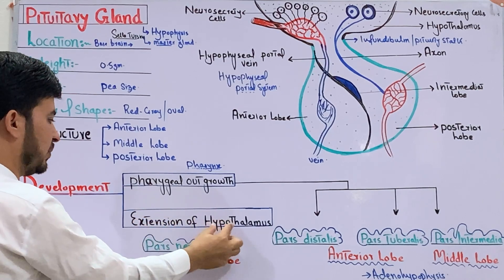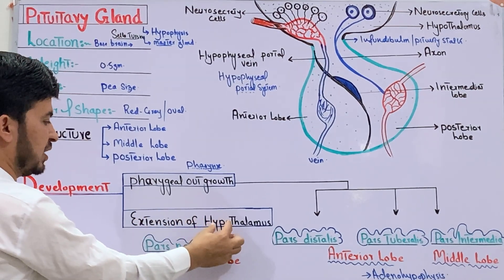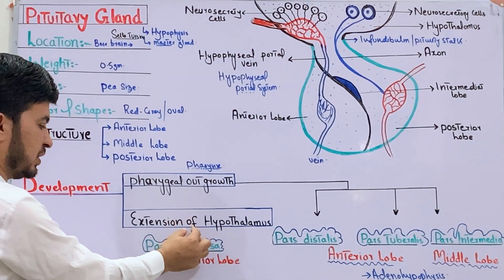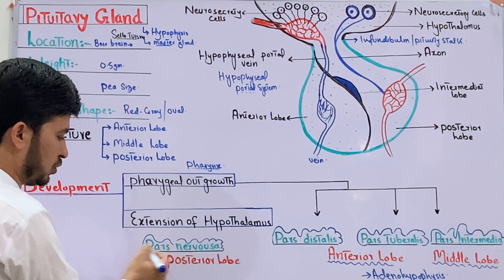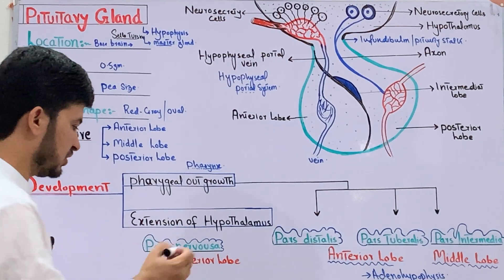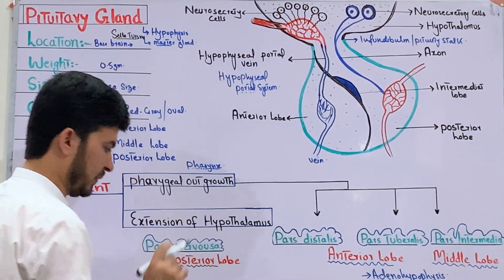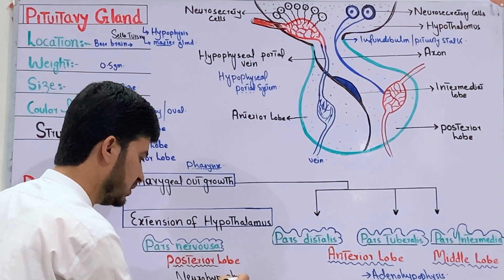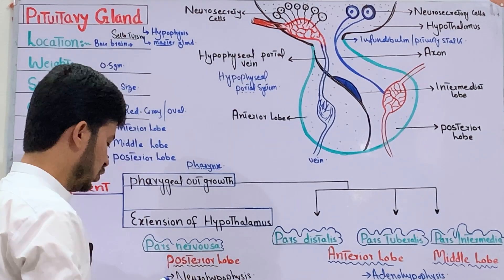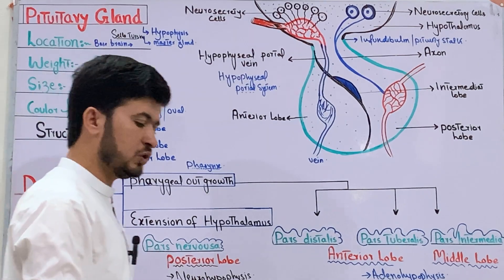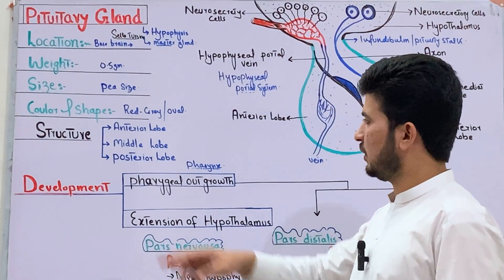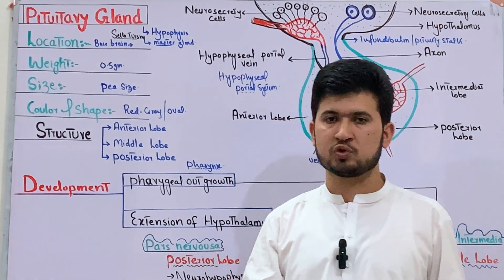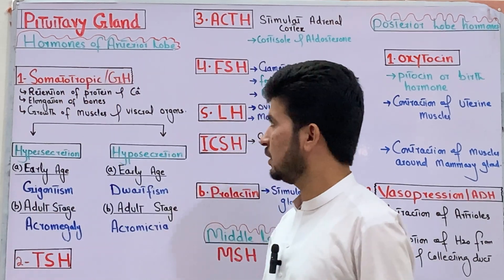The second structure is the extension of the hypothalamus, called pars nervosa, which forms the posterior lobe — together known as the neurohypophysis. The pituitary gland thus develops into 3 lobes: anterior, middle, and posterior, each secreting different hormones.